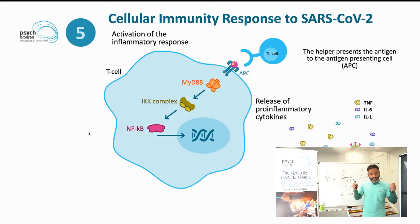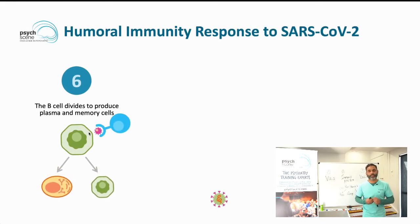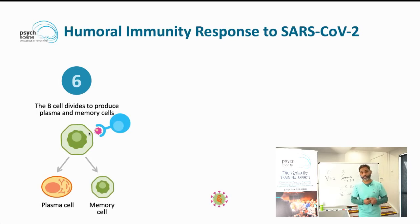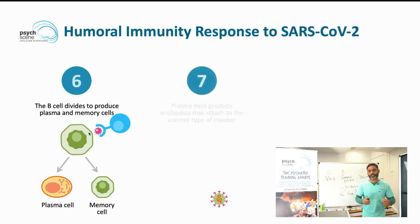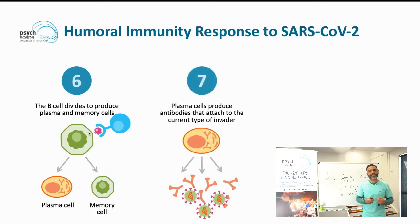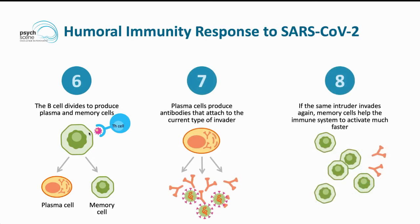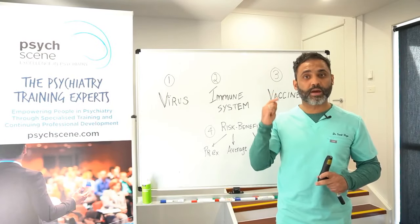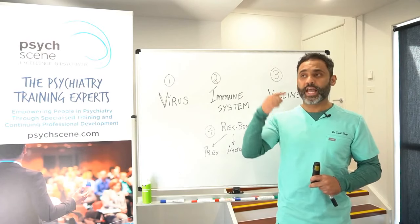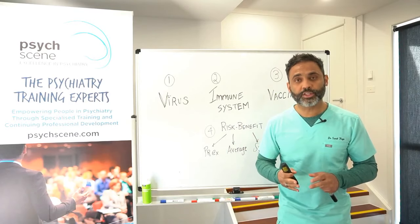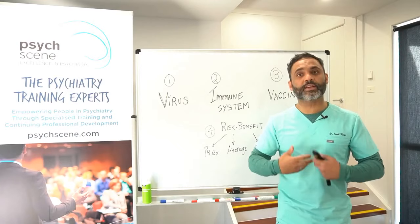The next stage is the humoral immune response, involving the B cell. The helper T cell recruits B cells, which constitute the humoral response. There are two types of B cells: plasma cells and memory cells. Plasma cells produce antibodies that attach to the invader to destroy it. Memory cells, as the name suggests, remember the virus's antigen — the weapon — and will activate the immune response much faster the next time the virus is encountered, going straight to the antibody-mediated response and saving valuable time.